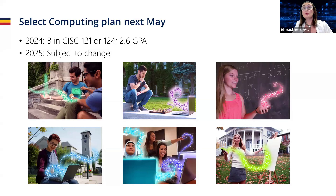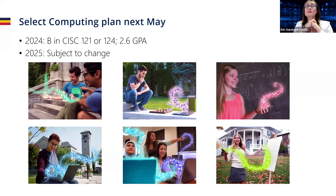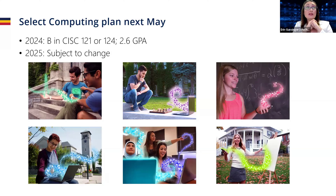If you have 24 units, you will be considered a second year student and you must choose a plan — you have to select a plan that you qualify for, or you can't enroll in your courses in July. You will not be put into a plan by default. If you have fewer than 24 units, you will still be considered a first year student. You'll retain all the enrollment priority of a first year student and can retake courses like 121 and 124, improve your GPA, and choose your plan the next spring.